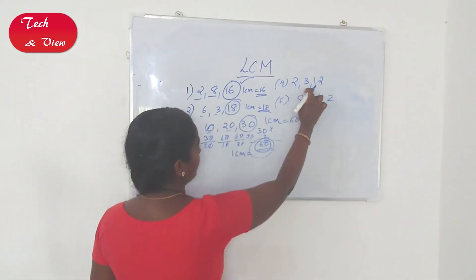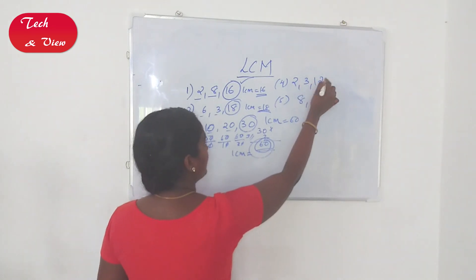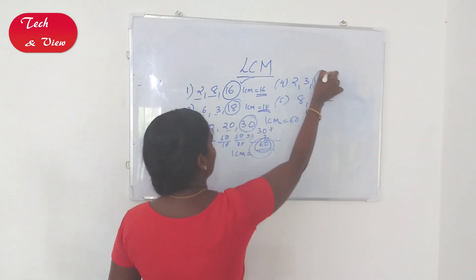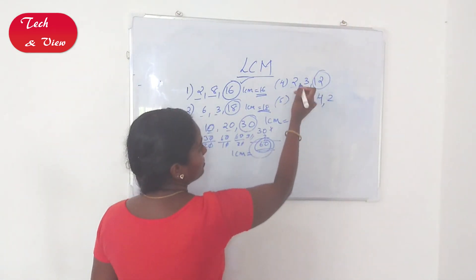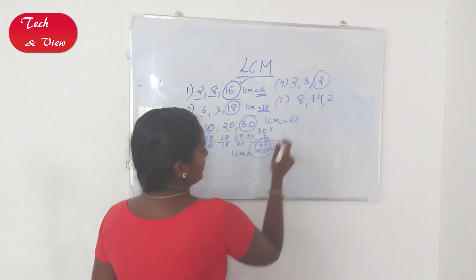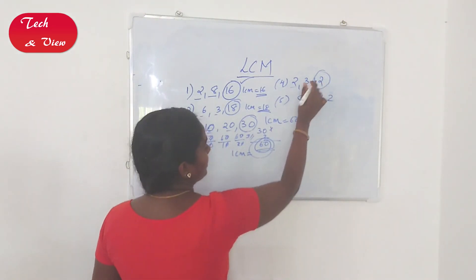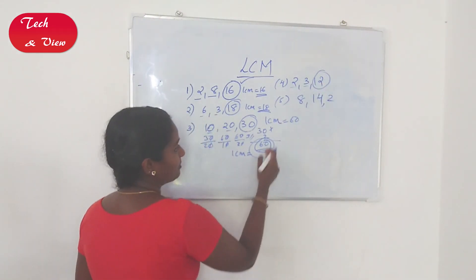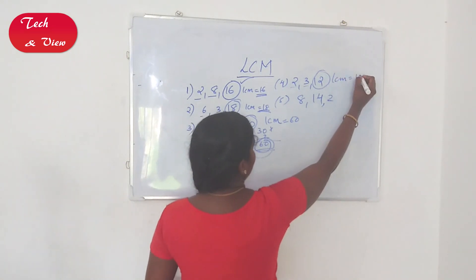Next example: 2, 3, 12. The largest number is 12. 12 divided by 2 is 6 — fully divisible. 12 divided by 3 is 4 — fully divisible. So LCM is 12.